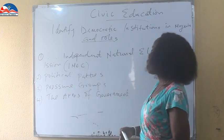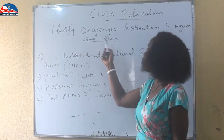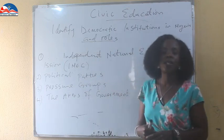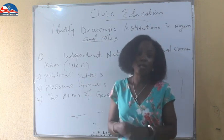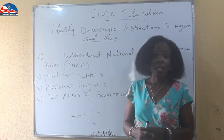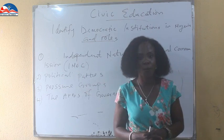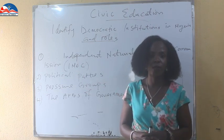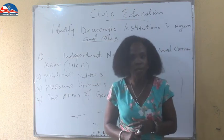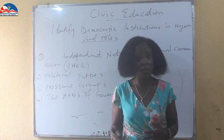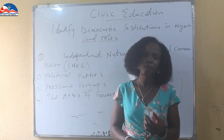Now I am going to discuss each of these institutions with the roles they play, because we need to identify democratic institutions in Nigeria and their roles. INEC is an independent body. They carry out functions that help to run a free and fair electoral system. One of the things they do is they register political parties.